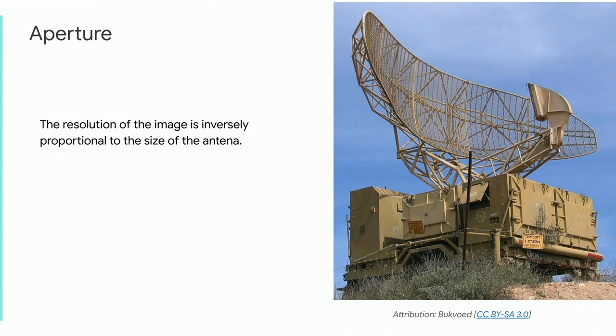The aperture itself is generally controlled by the antenna, and antennas can be designed to be wide in one dimension and narrow in the other. You don't have a lot of control over physical apertures when you're on a satellite — you don't want to put a really large thing on top of a satellite that might be unstable or vibrate.